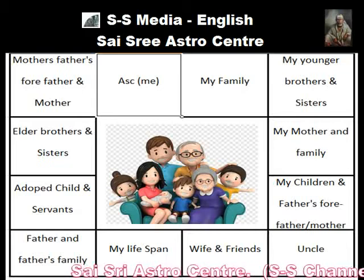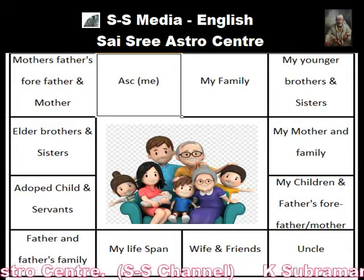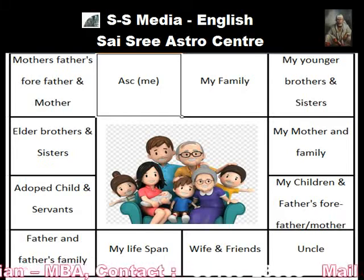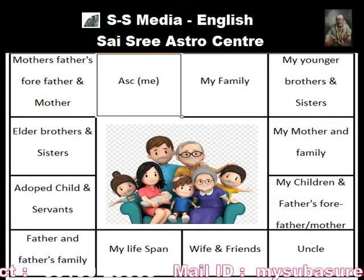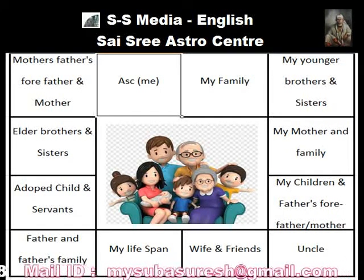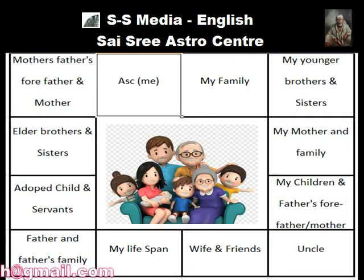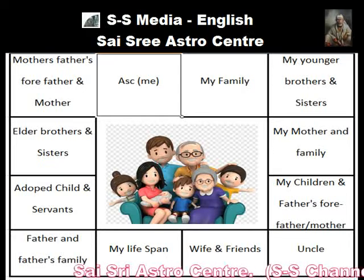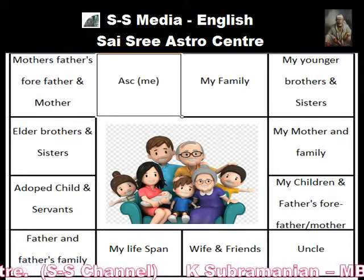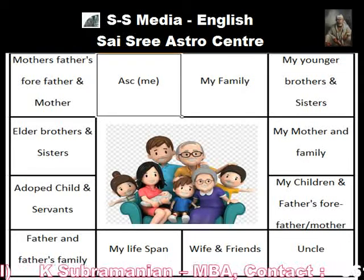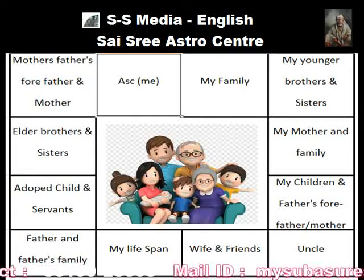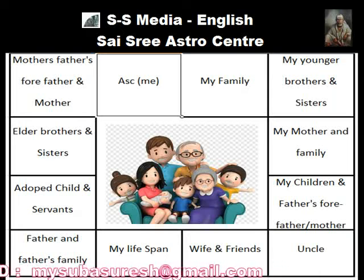The fifth house denotes the chart holder's children, and also the chart holder's father's forefathers and grandmothers — so it is the forefathers of the father's side. The sixth house indicates the uncle and the uncle's family. We get associated with the mother's side uncle and father's side uncle, generally through the mother's side uncle. So how better we will get benefited — all these things can be seen through the sixth house.